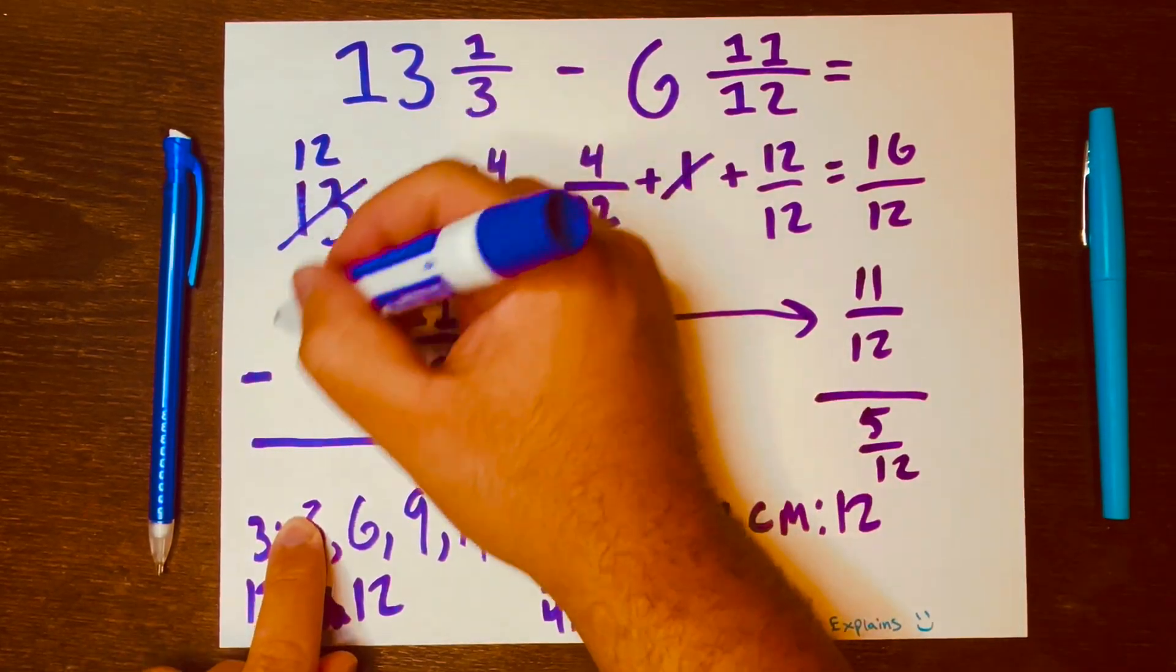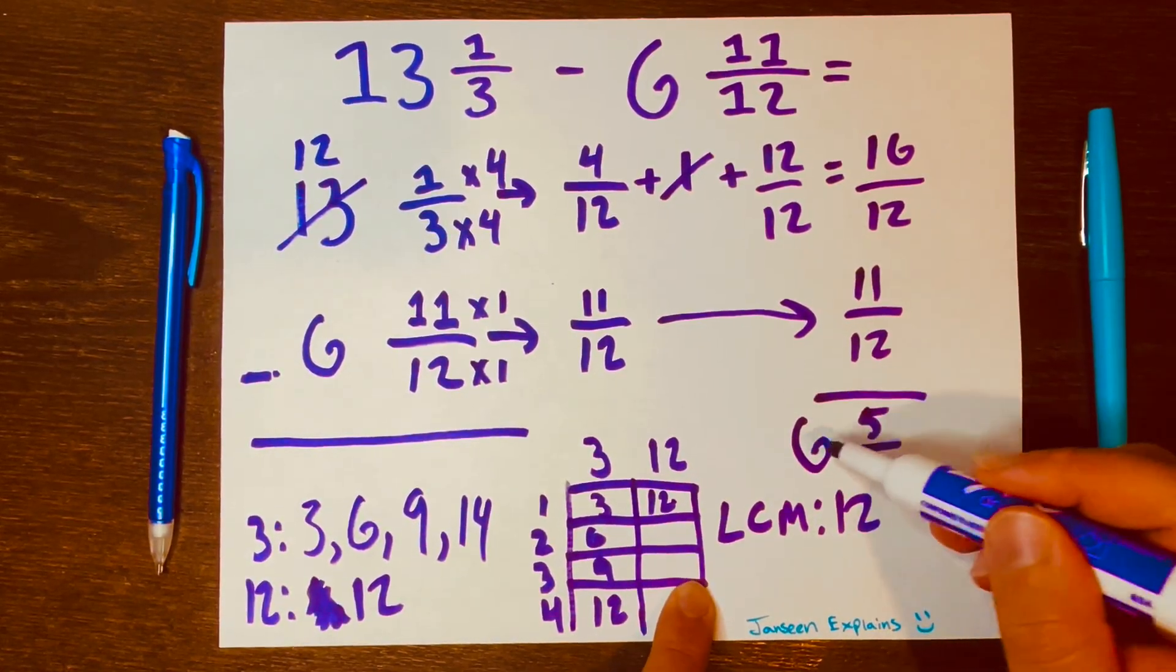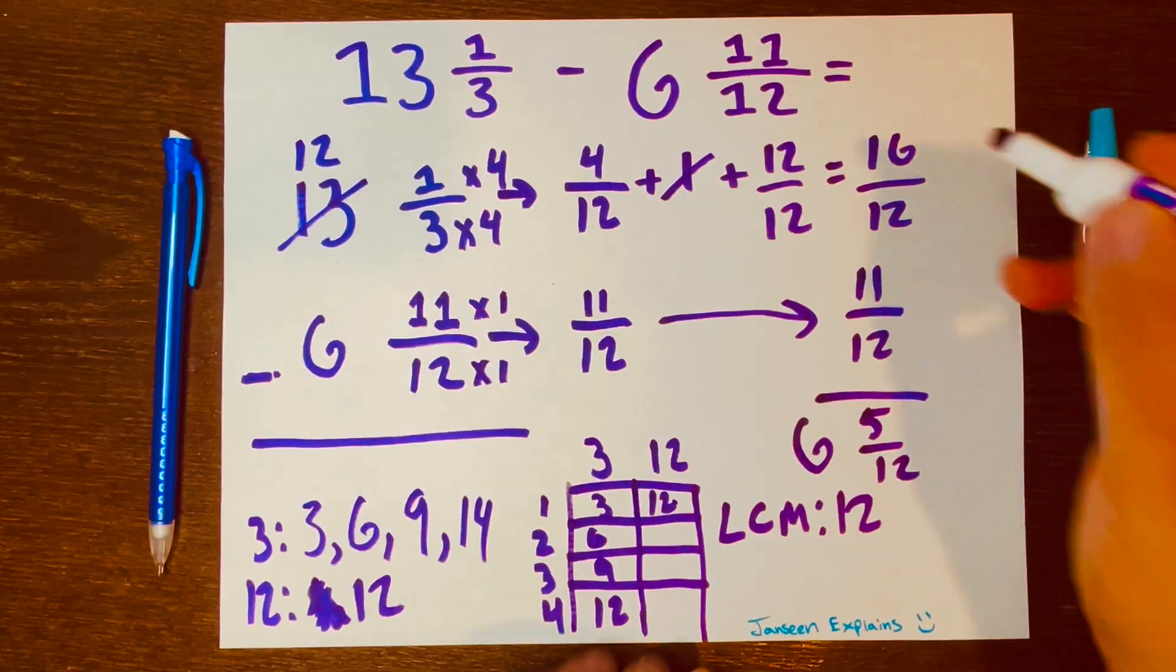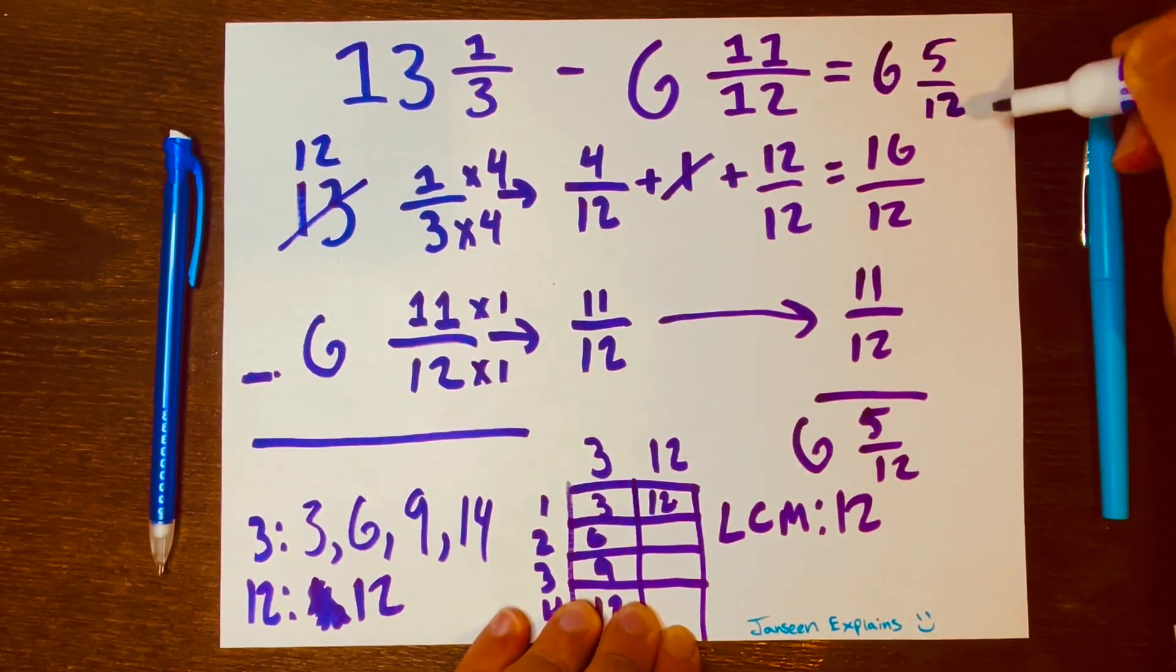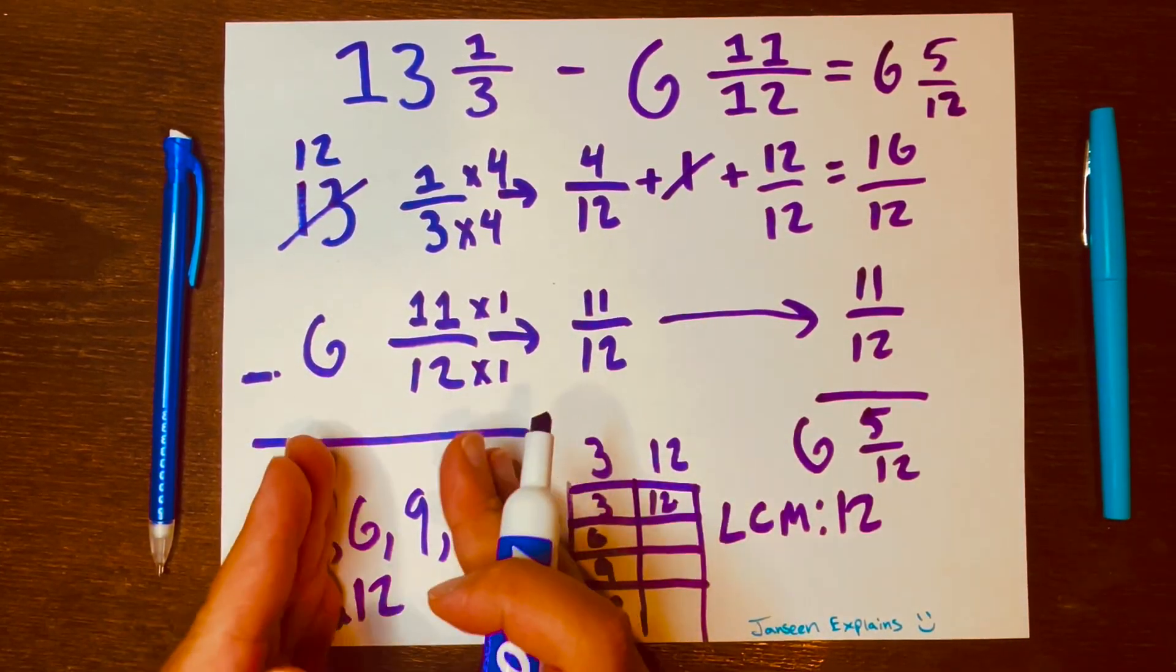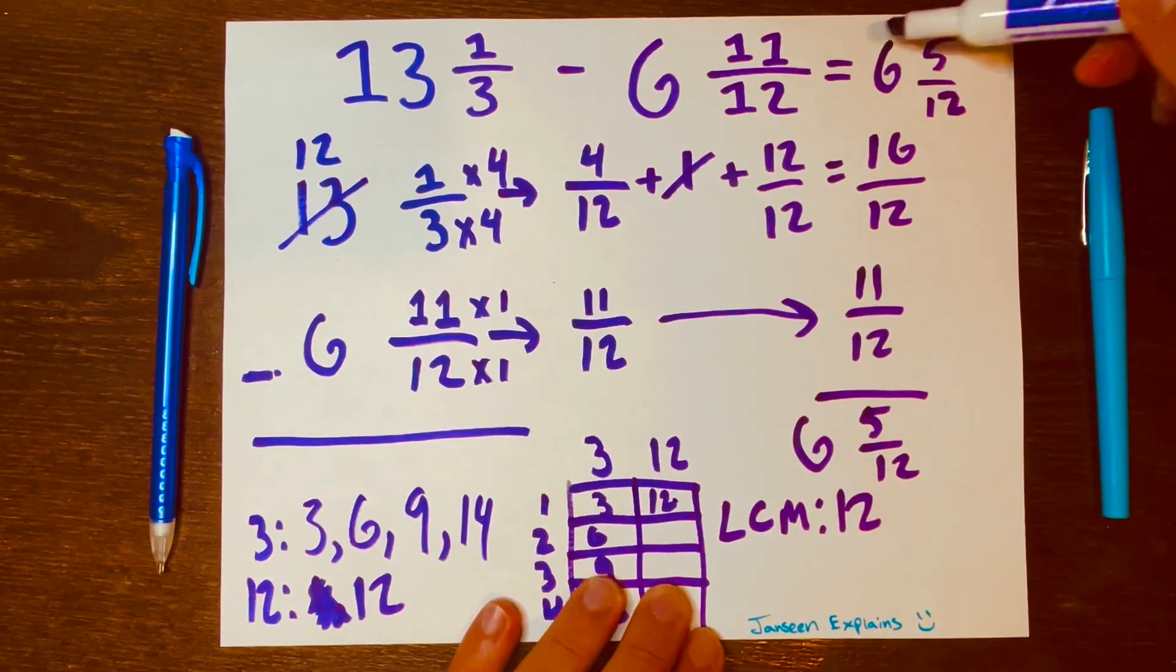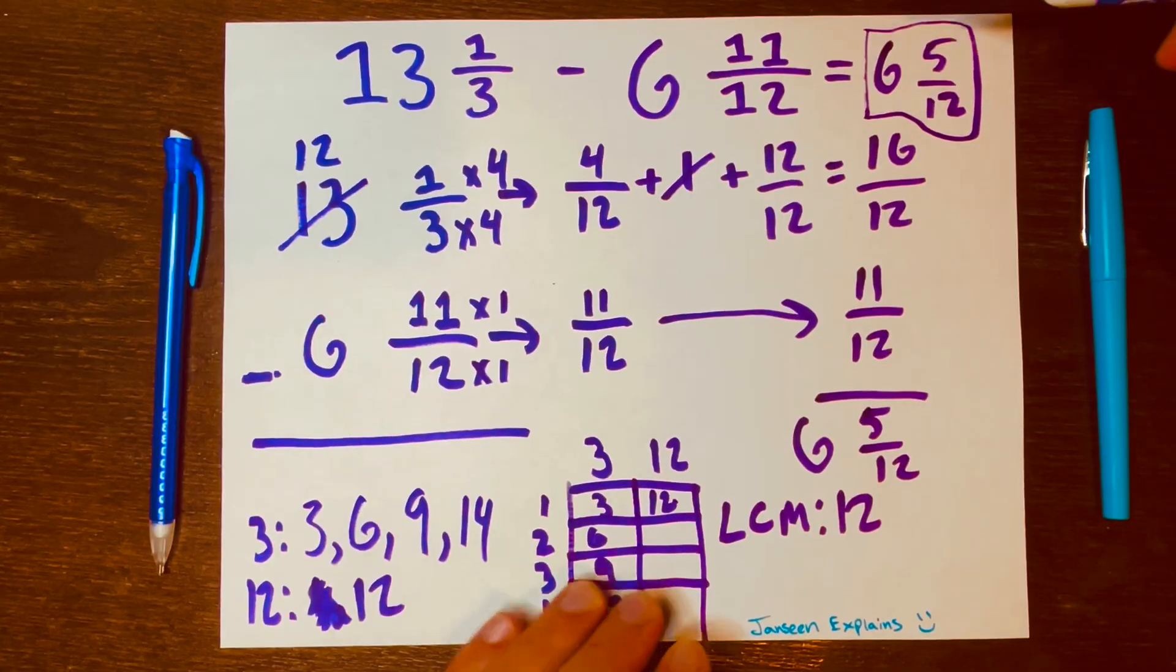And then 12 minus 6 is 6. I'll write it here. So your answer is 6 and 5/12. So I'll write it here. 6 and 5/12. And I did say that earlier that we're going to combine the whole number and the fraction together and that will be our answer. So our answer is 6 and 5/12. And there you go.